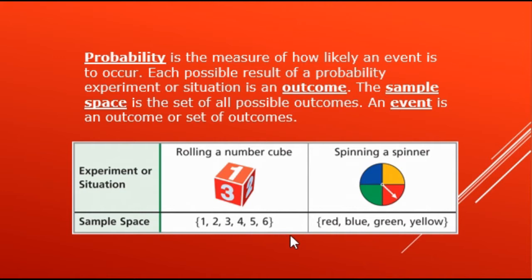The second experiment is spinning a spinner. The sample space, or the set of all possible outcomes, are red, blue, green, and yellow.